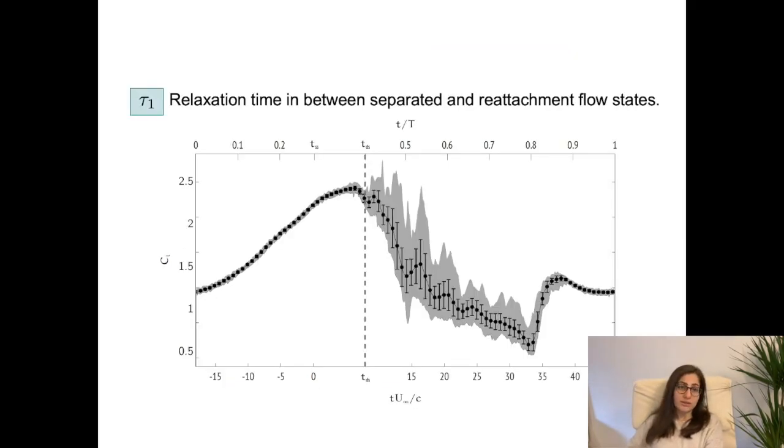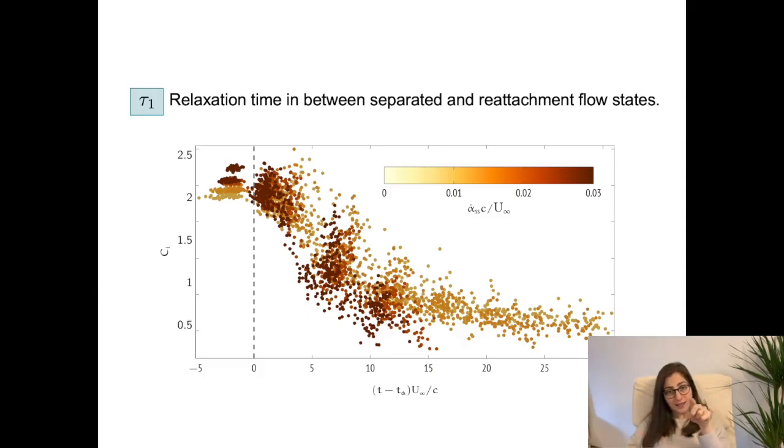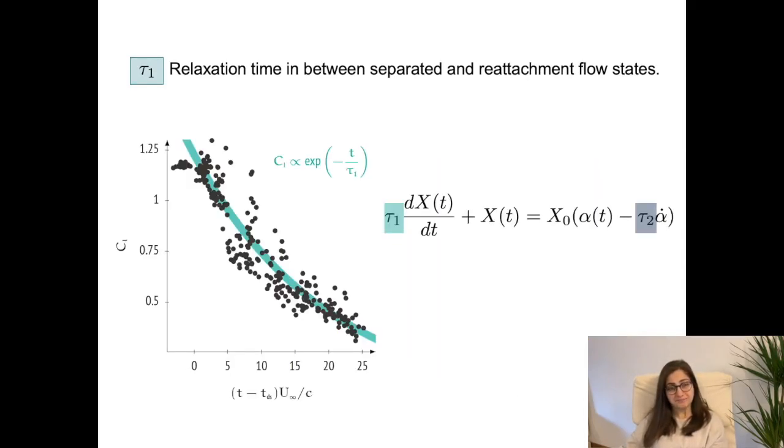Then we continue with tau 1 parameter. It represents the relaxation time in between separated and reattachment flow states, and starting point corresponds to the time right after dynamic stall happens. After the first dynamic stall vortex sheds, the vortex shedding creates load fluctuations until the reattachment starts. This creates jitter in the flow where the lift peak sees variation in amplitude for different cycles. If we plot dynamic stall vortex shedding lift peaks, we will see that these lift peaks decay after stall onset. When we plot those peaks for different pitching motion, we see a decaying trend more clearly, which is also independent of motion unsteadiness. If we represent the decay with a curve, we can end up with exponential decay, where tau 1 is the half-life constant, meaning that for the relaxation part, C_l can be represented by exponential decay with a constant relaxation term. In our case, this is tau 1.